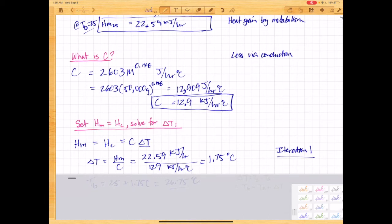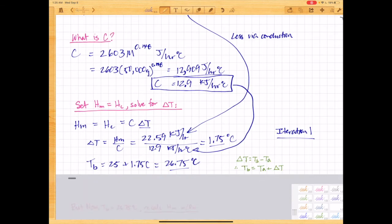So dividing both sides by C, we can solve for delta T. And the heat of metabolism comes from up above here. And then we can use this C here to put in the denominator. And we get a result of 1.75 degrees Celsius. And so that means that because delta T is body temperature minus ambient, or body temperature is ambient plus delta T, it gives us a body temperature of 25 plus 1.75 is 26.75. So it's actually raised the body temperature by almost 2 degrees, 1.75 Celsius. And that concludes iteration number one.